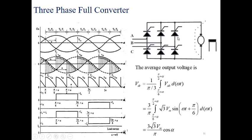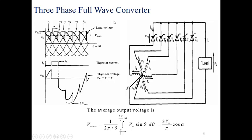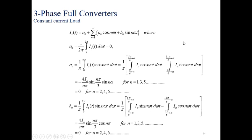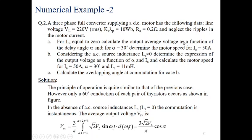This is the full analysis for the fully controlled converter. For the fully controlled three-phase bridge converter, the average output voltage formula is: V_dc equals three root two V_LL upon pi, multiplied by cos alpha. This is the average voltage formula.